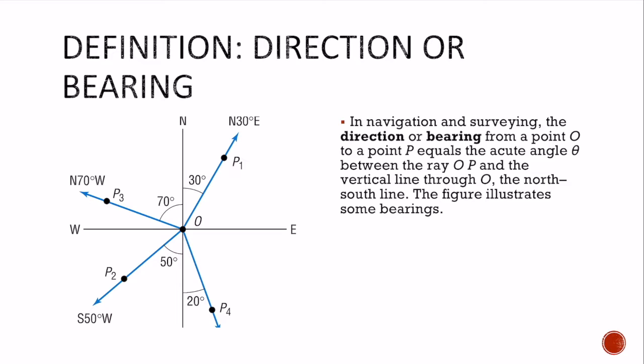Next, I want to talk about the definition of direction or bearing, and that's the last thing in this section pretty much. So in navigation and surveying, the direction or bearing from a point O to point P equals the acute angle formed between the ray and the north-south vertical.